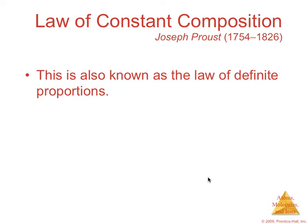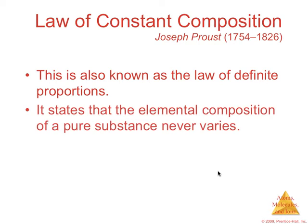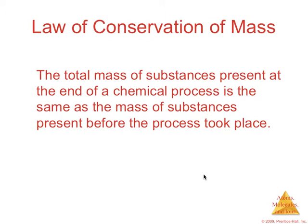That's basically what that says. And this is known as the law of definite proportion, also known as the law of constant composition. Conservation of mass: mass of substances present at the end of the chemical process is the same as the mass of substances before, and that really lets us balance chemical equations. The number of type of atoms as the reactants has to equal the number and type of atoms in the products. So when we balance equations, we're really just making the equation obey the law of conservation of mass, or at least describing it.